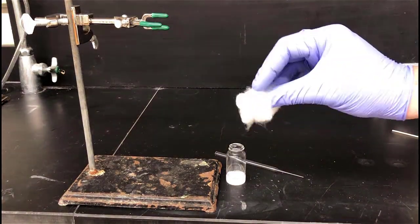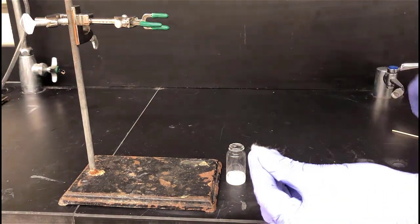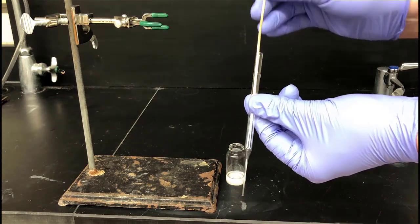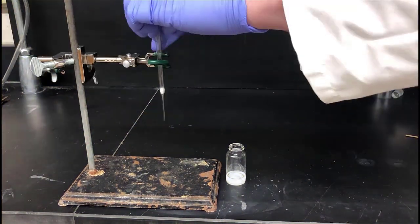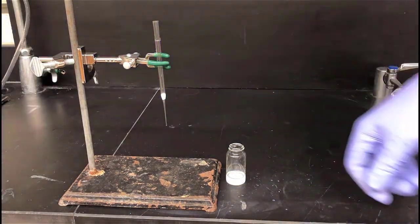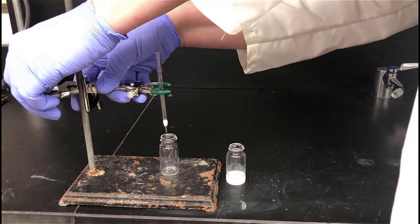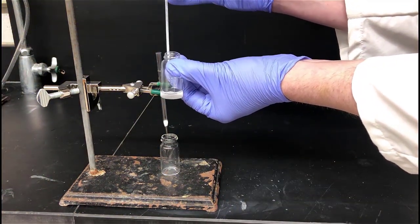After the mixture has sat for a while, we'll filter off the magnesium sulfate using a microfiltration apparatus. This consists of a small pipette with a little bit of cotton jammed into the tip. Push the cotton down into the tip of the pipette, clamp it to a ring stand, and then pipette the mixture through into a clean, dry, pre-weighed vial. The cotton will filter out any magnesium sulfate that gets into the pipette.